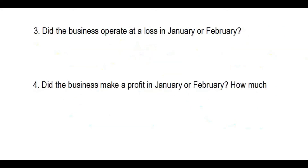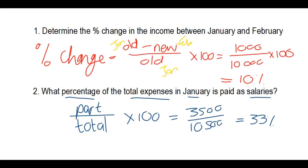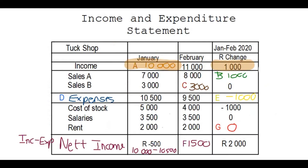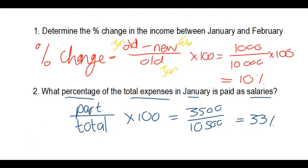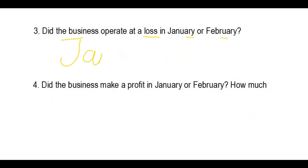Did the business operate at a loss in January or February? In January there was a negative 500 rand net income. The income was 10,000 but expenses were more, so the business lost 500 rand — that was in January.